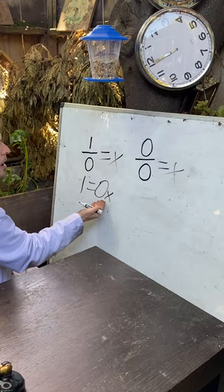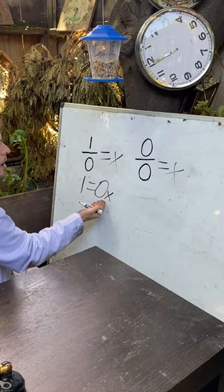And here that 0 equals 0 times x, where any number could fit the solution.